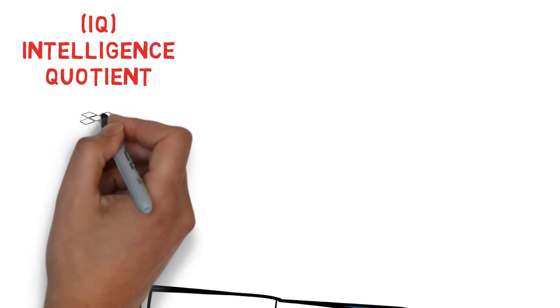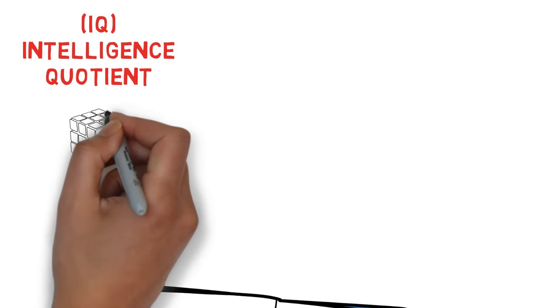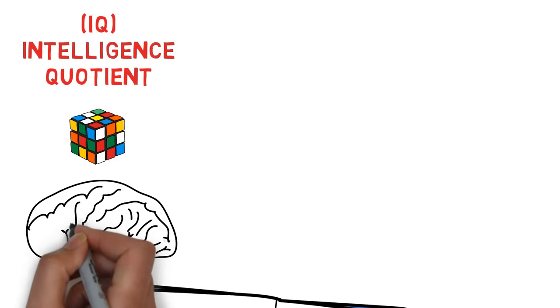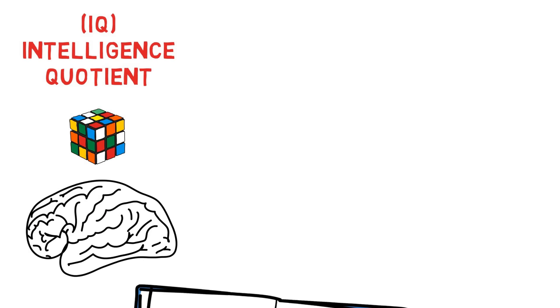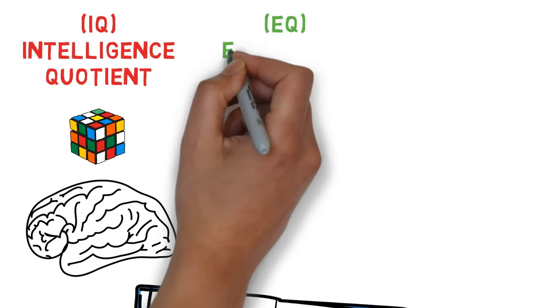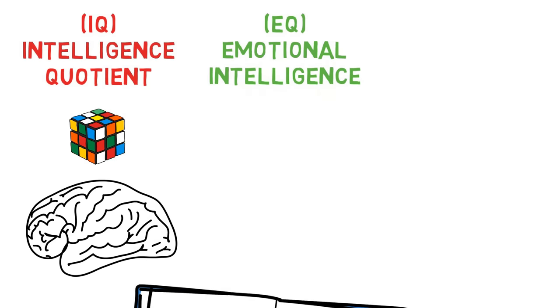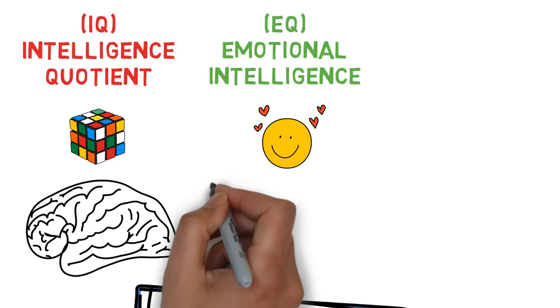Daniel Goleman argues that IQ isn't everything. Our current view of intelligence is too narrow, ignoring important abilities that determine how well we do in life. The superior metric that Goleman prefers to use to measure life's success is EQ, otherwise known as emotional intelligence. It's made up of these five things.